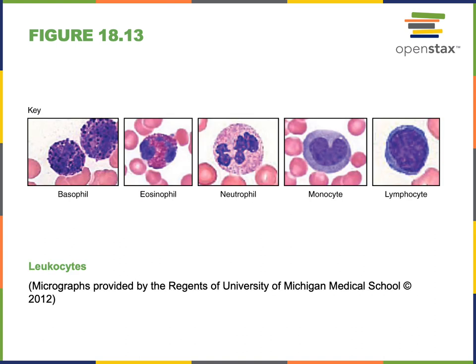Leukocytes are categorized into two large groups: granular leukocytes, also known as granulocytes, and agranular leukocytes, also known as agranulocytes. Granulocytes contain dark-staining cytoplasmic granules — secretory vesicles that help defend against infection by releasing cytotoxic chemicals or chemicals that promote and regulate inflammation — whereas agranular leukocytes do not contain these granules. The granulocytes include basophils, eosinophils, and neutrophils; the agranular leukocytes are monocytes and lymphocytes.